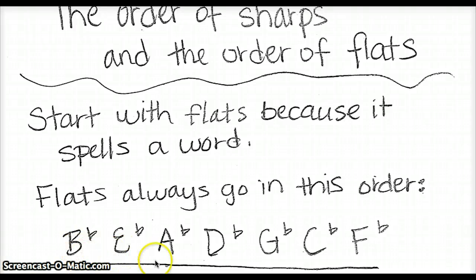If there's three flats in the key signature, it'll go B flat, E flat, and A flat, and so forth. So they have to always go in this order. If you see one flat, it wouldn't be a D flat or a G flat, because it has to start with the B flat and go in that order.